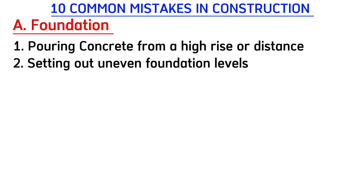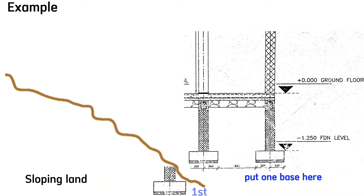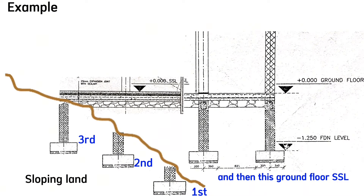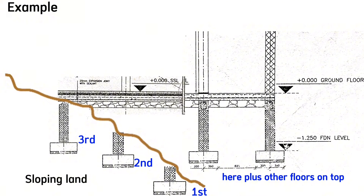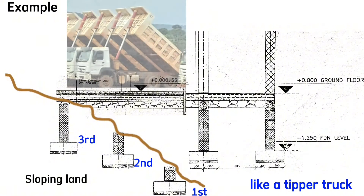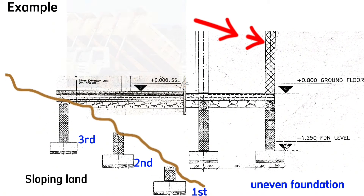Common mistake number two is setting out an uneven foundation level. For example, if this is a sloping land, most contractors put one base here, another one here, and another one here, with the ground floor structural slab level here and other floors on top. This makes the building more like a tipper truck, and in case of an earthquake, this building is more likely to fall to one side because of the uneven foundation.